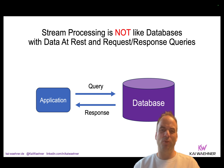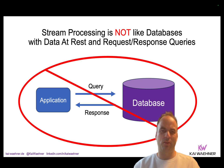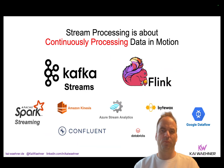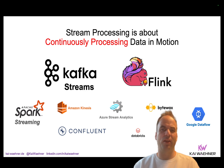But with stream processing, you need to completely rethink how you can use data. The traditional database approach doesn't work if you need low latency, scalable workloads, and to build many innovative new applications. Something like a ride-hailing app like Uber or Grab would not work with a database approach. Stream processing is really about continuously processing data in motion — you do not always store it in a database or data lake first. Instead, you directly take action on the fly while the data is in motion, directly after it is created in a source, which could be a sensor, a mobile app, or any other kind of log file.